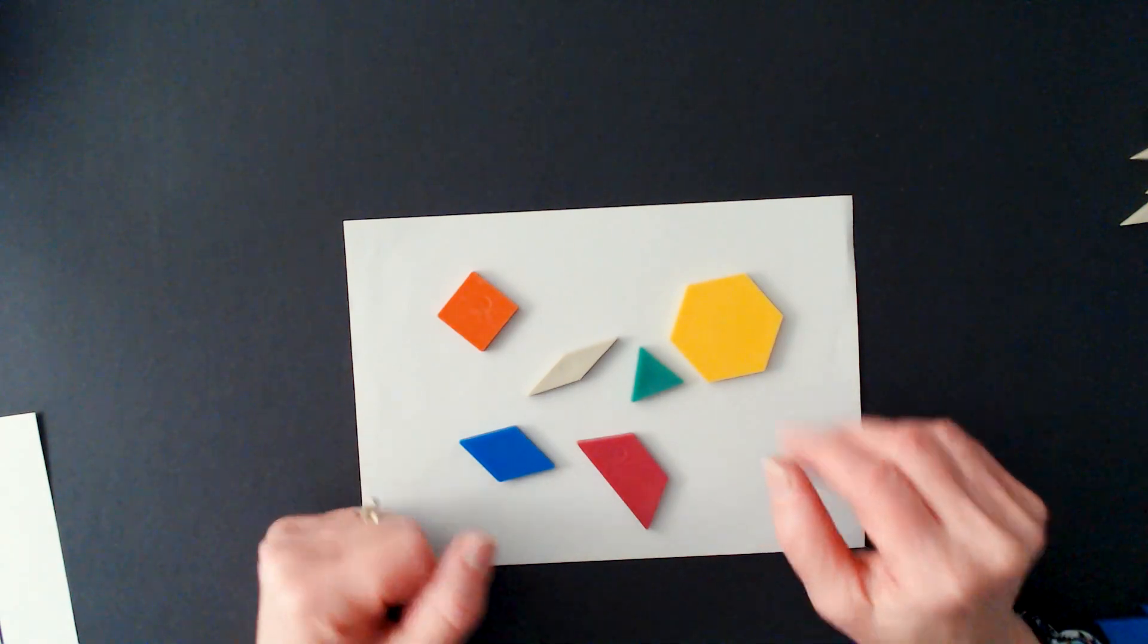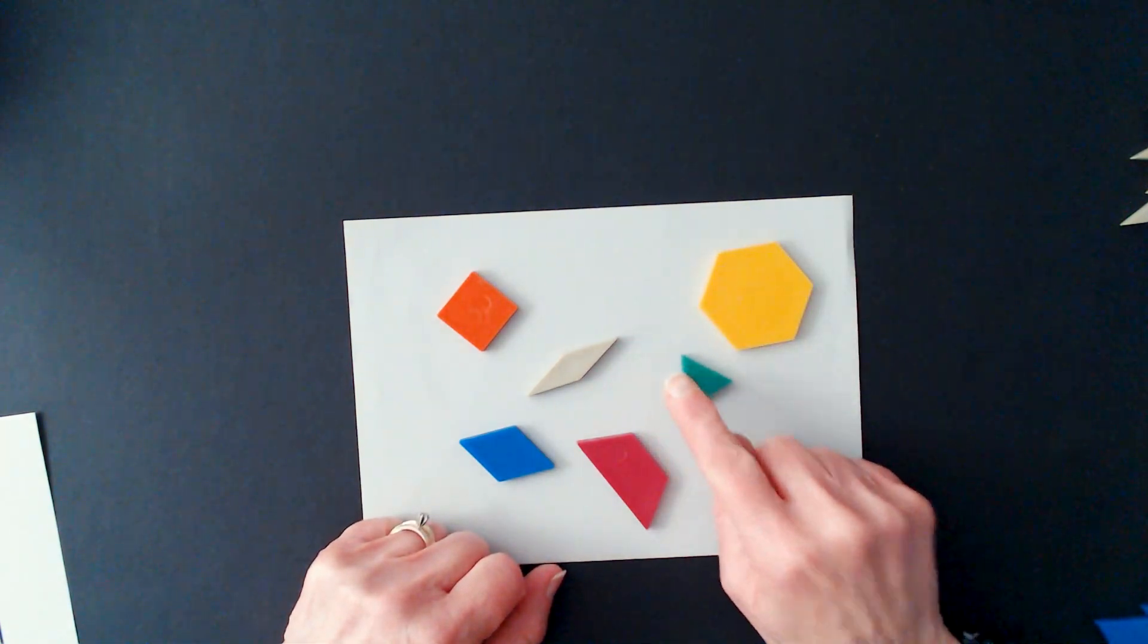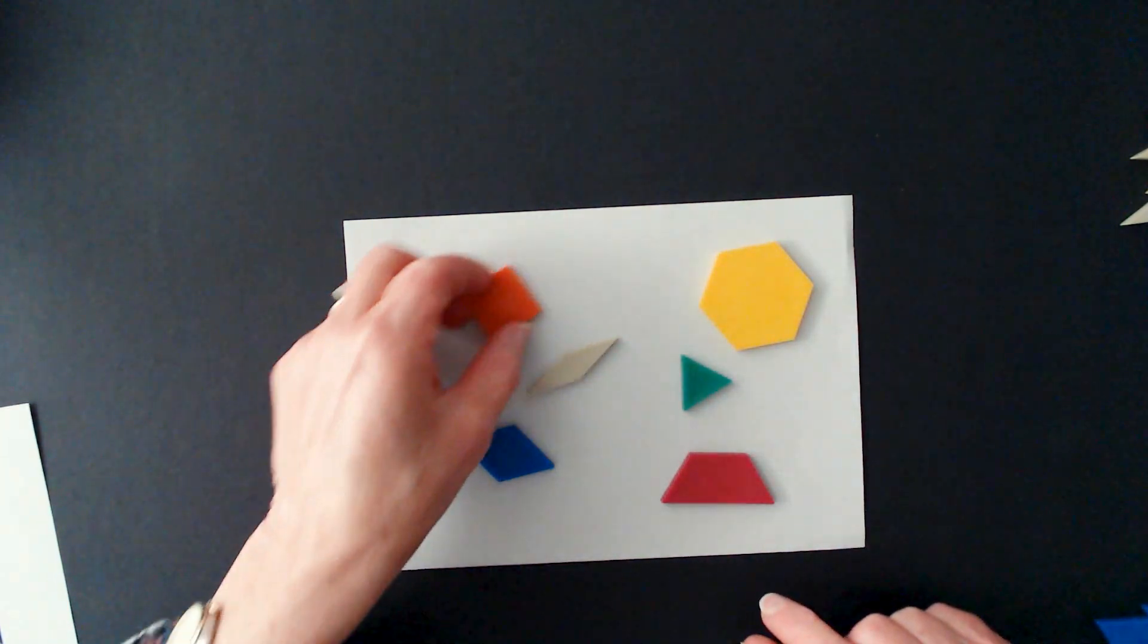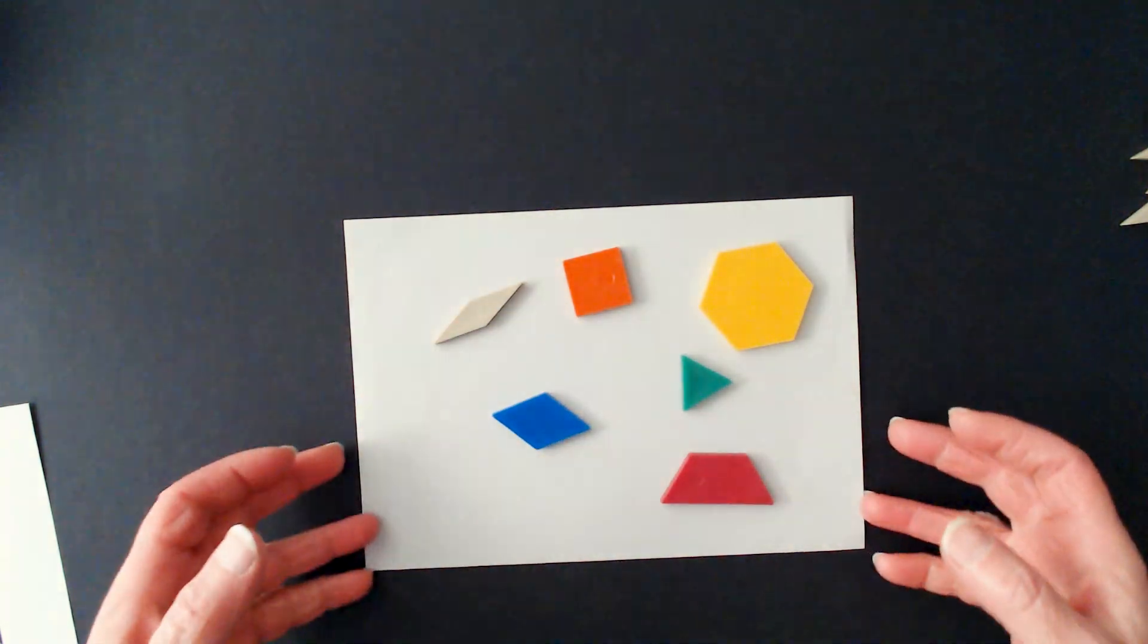These are pattern blocks. We have a hexagon, triangle, trapezoid, square, rhombus, and parallelogram.